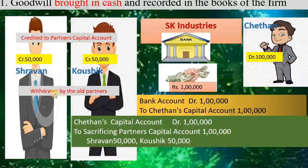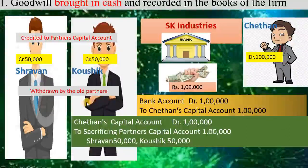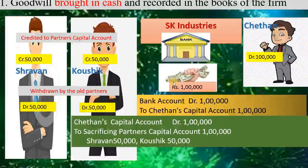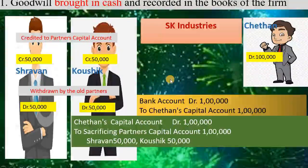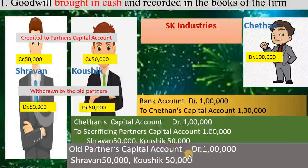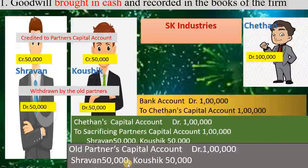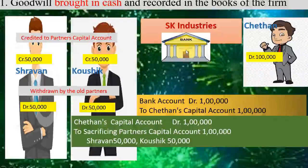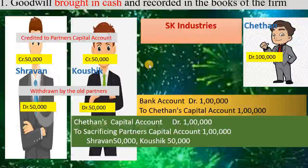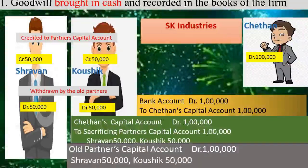For the third transaction, if these two partners withdraw their share of goodwill — Shravan withdraws 50,000 and Kaushik withdraws 50,000 — the cash balance is withdrawn from the partnership firm so the bank balance is again reduced. Our entry is old partners capital account debit, because these two persons are gaining by withdrawing the amount. So old partners capital account debit to bank account, because the bank account balance is withdrawn from the firm — cash outflows.